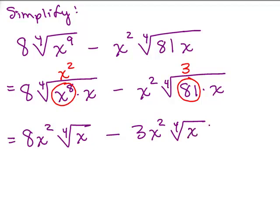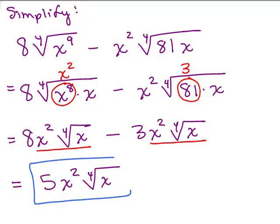Okay, now we have to look at the variable, square root, 4th root, whatever it happens to be, make sure it's all the same. I have an x squared 4th root of x, I have another x squared 4th root of x so I could just subtract the 8 minus 3, 5 and then I write down the x squared 4th root of x. See, isn't that fun, it comes out nice.